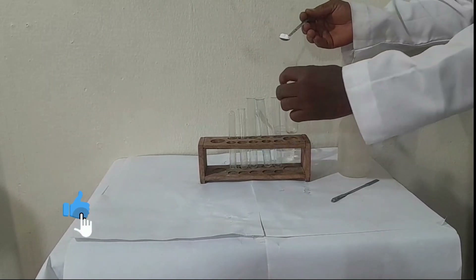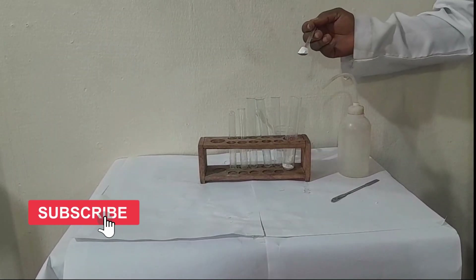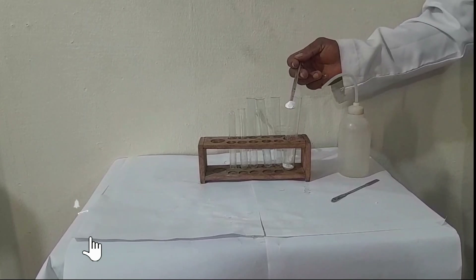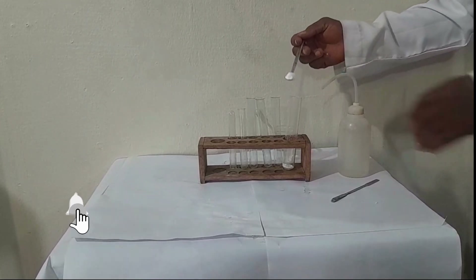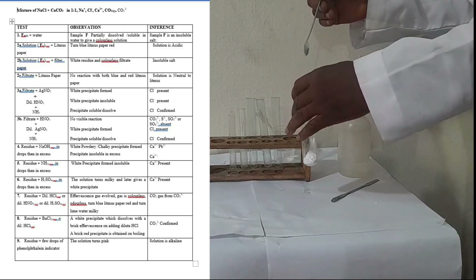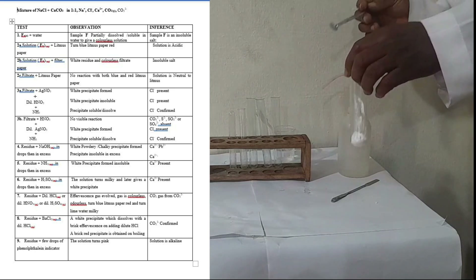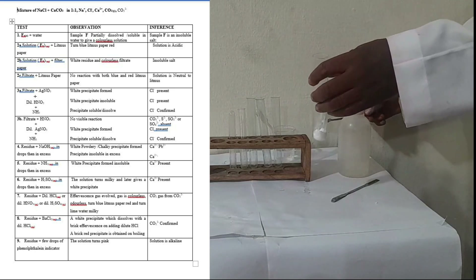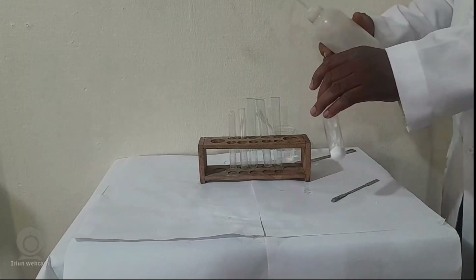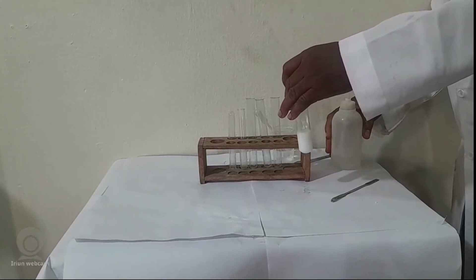Take one spatula spoonful of sodium chloride and one spatula spoonful of CaCO3, both inside the boiling tube — that's a one-to-one ratio. We're going to add about 10 ml of distilled water. Make sure you mix thoroughly.